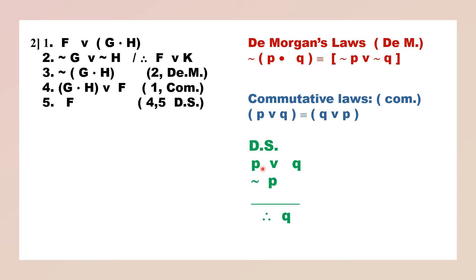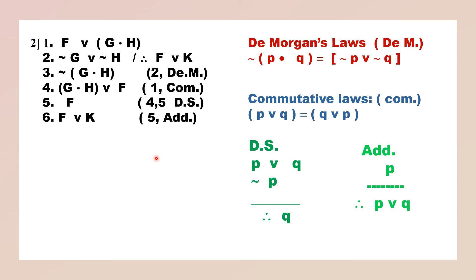Once you have got F, you can add K to it by the rule of addition: P, therefore P wedge Q; F, therefore F wedge K. Fifth step: addition.